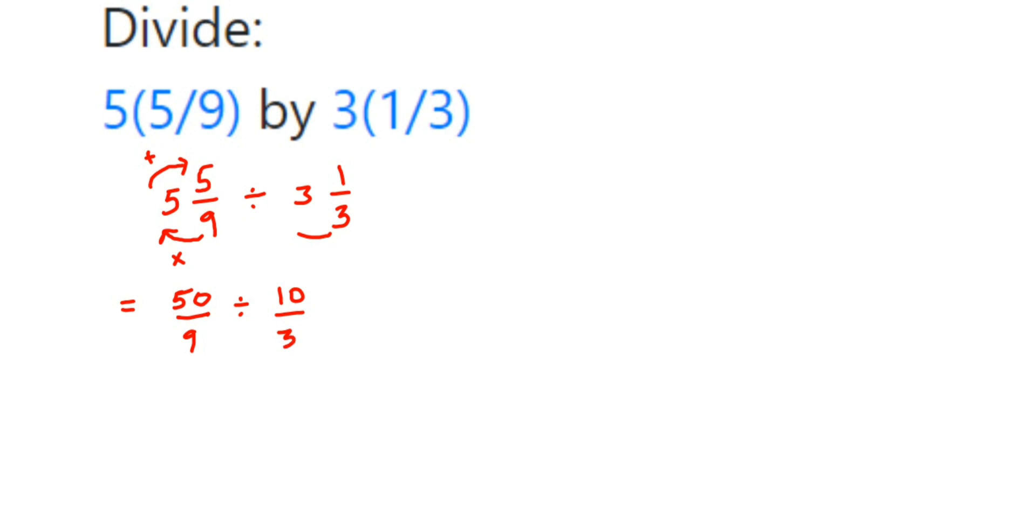Now here we have dividing two fractions. When you're dividing two fractions, the first fraction will remain the same. In place of division, we'll put multiplication. We'll take the reciprocal of the second number. The second number is 10/3—the reciprocal will become 3/10. Reciprocal means you just interchange the numerator and denominator.